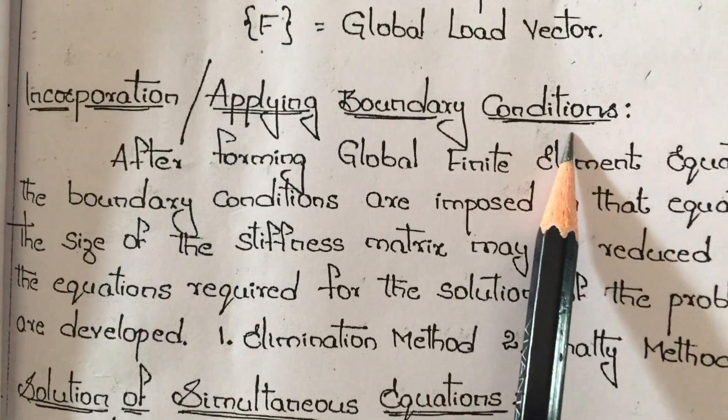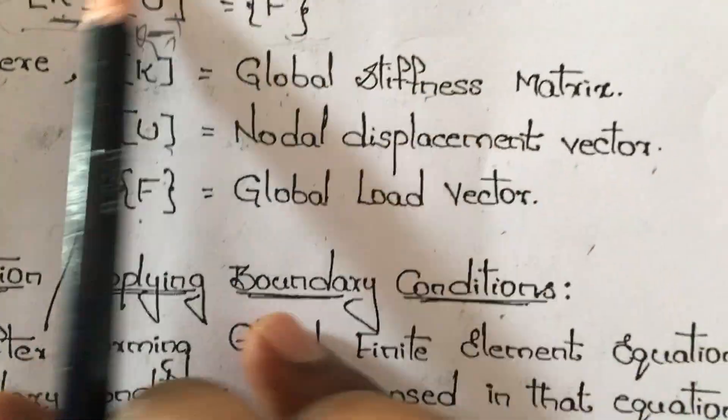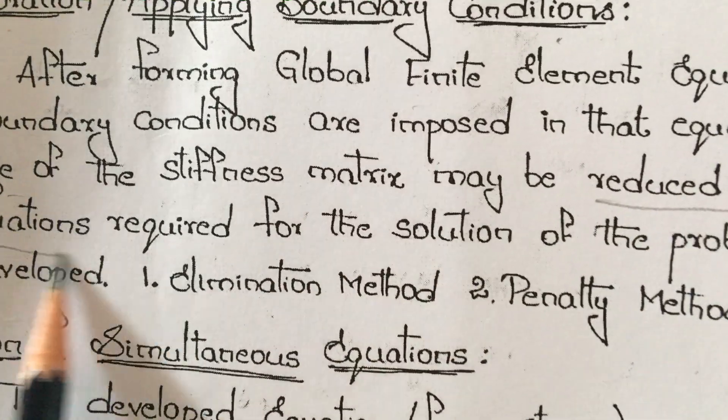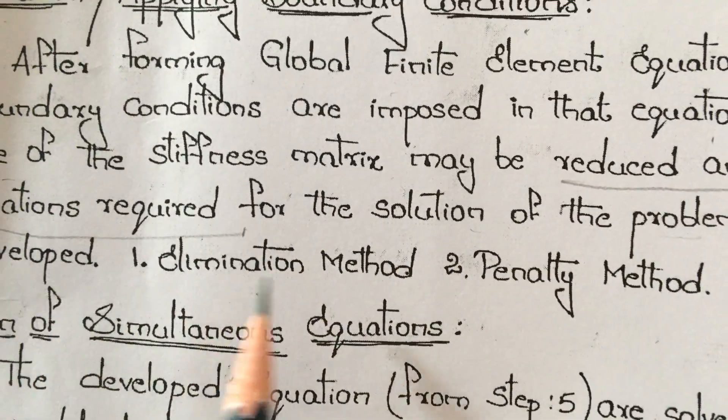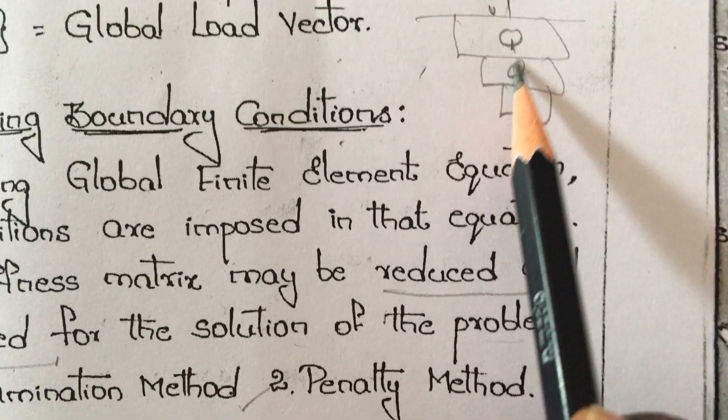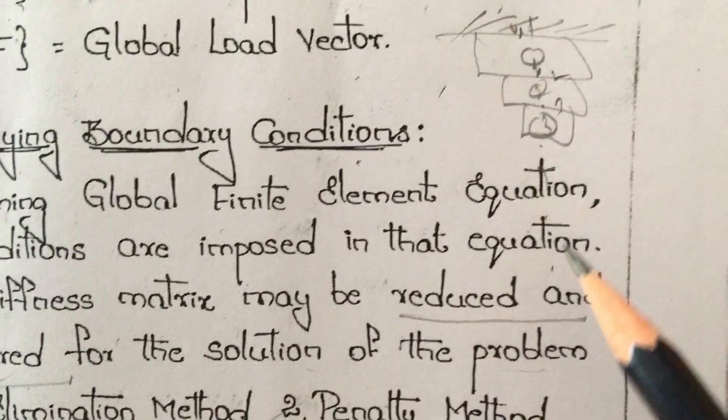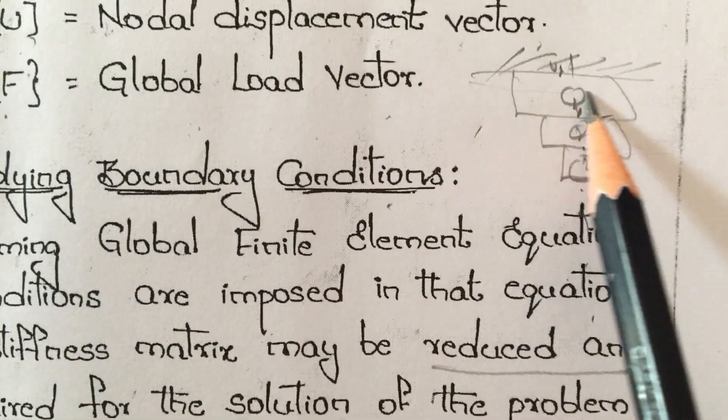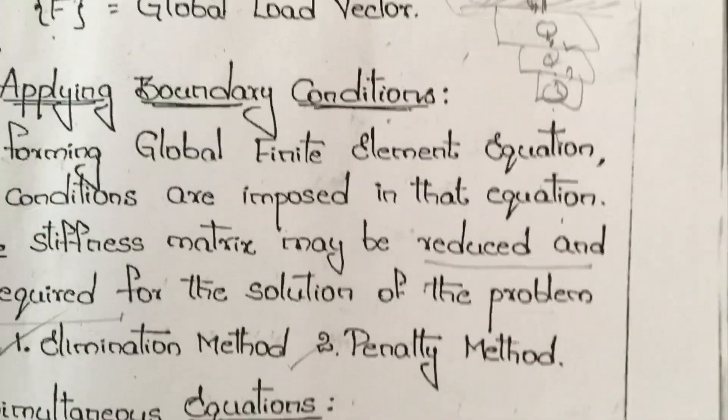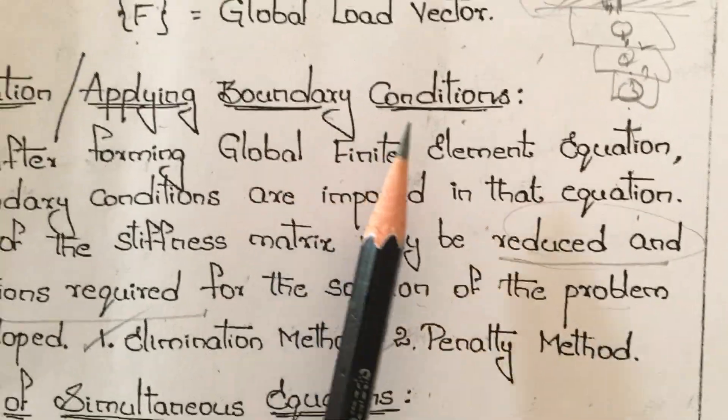After that, we apply the boundary conditions. After forming the global stiffness equation, the boundary conditions are imposed on that equation. The size of the stiffness matrix may reduce and the equations required for solution are developed using elimination method or penalty method. For example, if there are three elements with nodes 1, 2, 3, 4, and node 1 is fixed, then we eliminate it, making it zero in the matrix. This reduces the matrix size. That is applying boundary conditions.